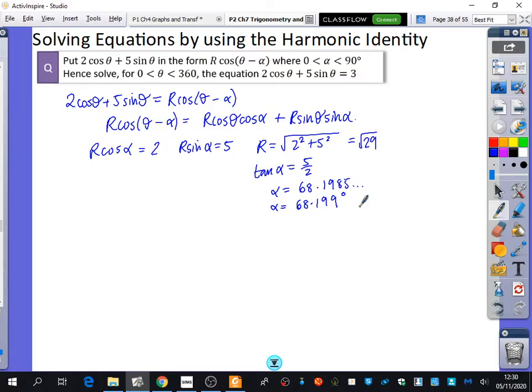So this tells me that 2 cos θ plus 5 sin θ is root 29 cos(θ - 68.199 degrees).